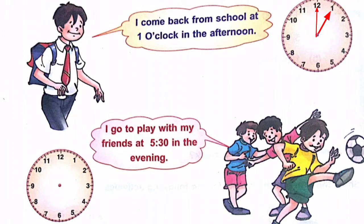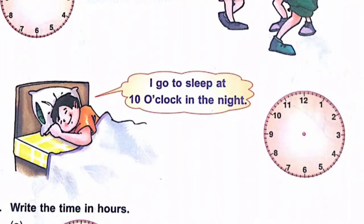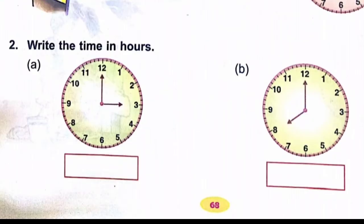I came back from school at 1 o'clock. Show the hour hand and minute hand on the clock. Then, I sleep at 10 o'clock — draw the hands accordingly. Also, write the time in hours: 3 o'clock, 8 o'clock, and so on.